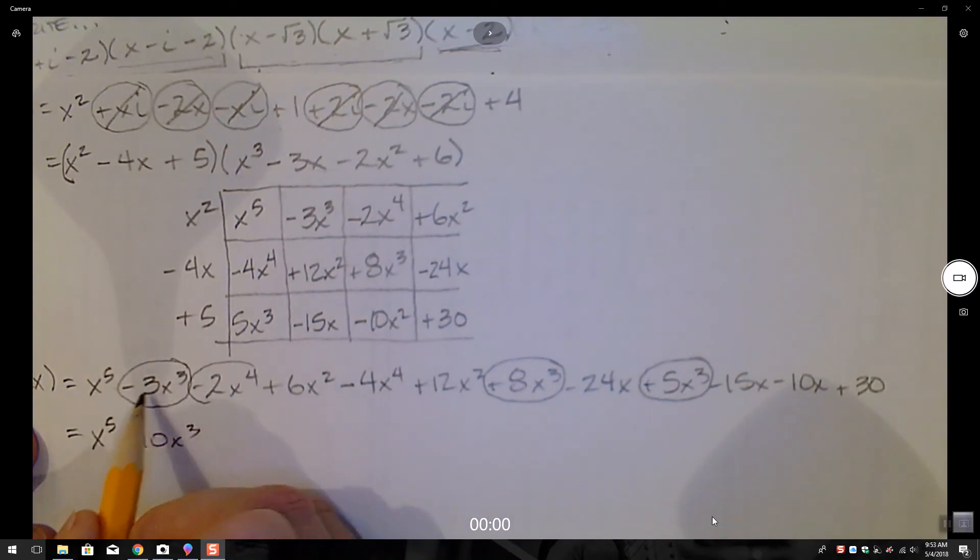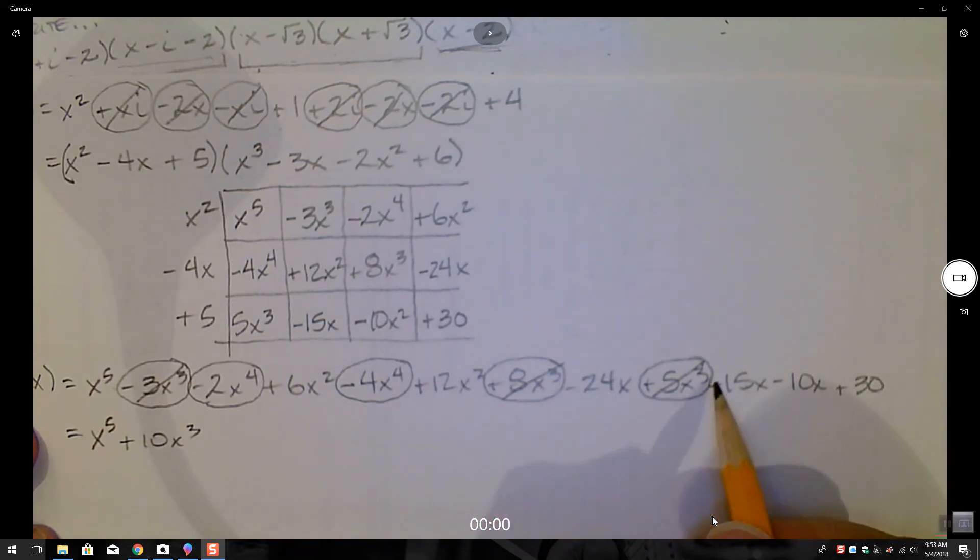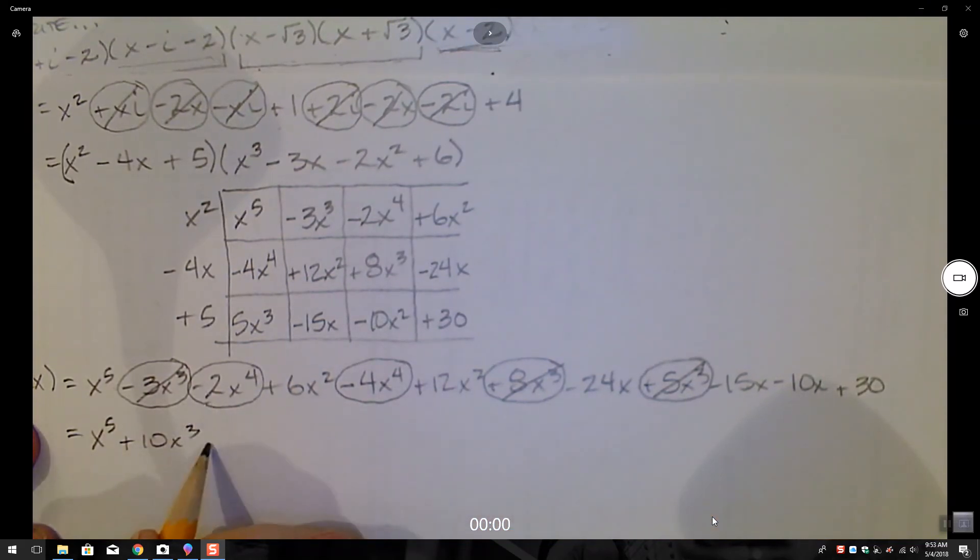Do we have any more? I should cross those off. Keep my counting straight. Minus 2x to the fourth. Another x to the fourth. And that's it for my x's to the fourth. So I got a minus 2 minus 4. So we have a minus 6x to the fourth.